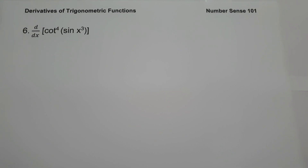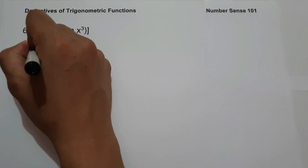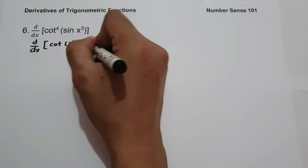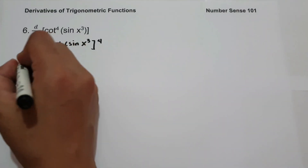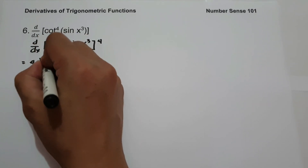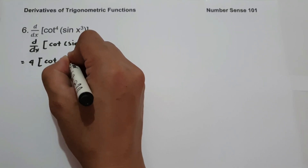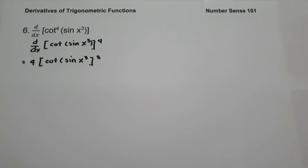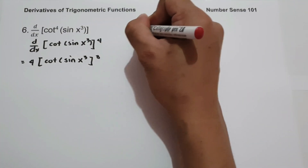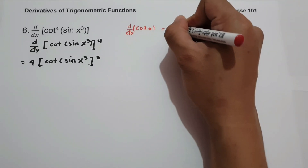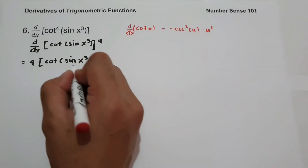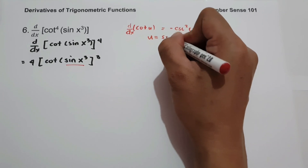On number 6, what is the derivative of cot⁴(sin(x³))? To simplify this, let us rewrite it as d/dx of [cot(sin(x³))]⁴. We have a chain rule, so we get 4 multiplied by [cot(sin(x³))]³ times the derivative of the inside. The derivative of cot(u) is negative csc²(u) multiplied by u', where u is sin(x³).